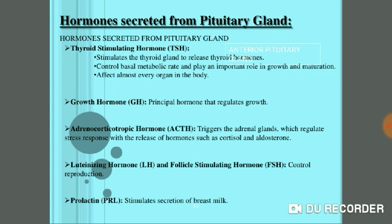ACTH (adrenocorticotropic hormone) controls the adrenal gland, which is located on top of the kidney. The adrenal gland has very important functions: it regulates the stress response through hormones like cortisol and aldosterone, maintains the liquid part of the blood, controls minerals, controls glucose metabolism, and regulates stress and emotions. So many functions are controlled by hormones from the adrenal gland.